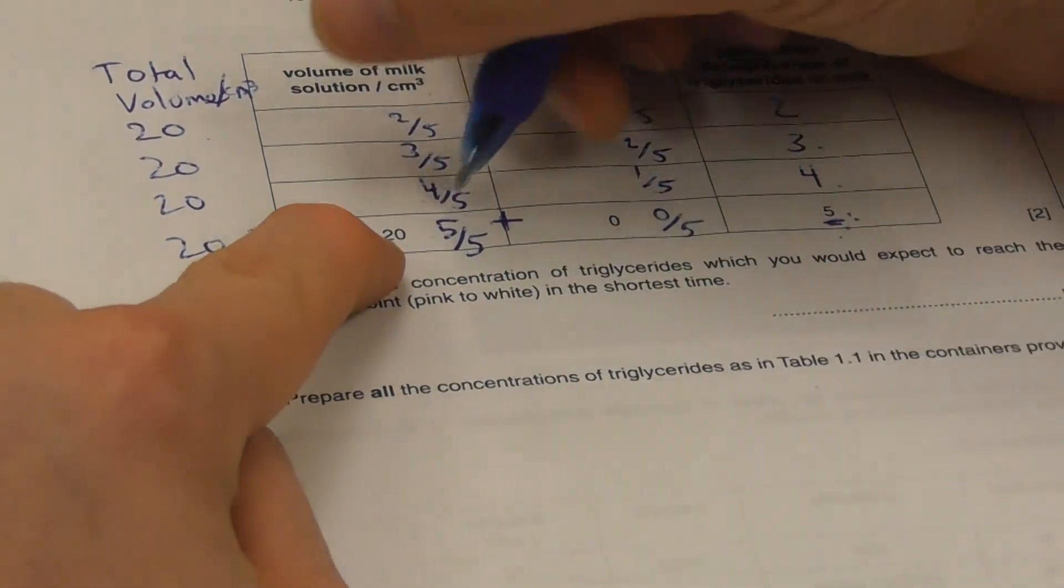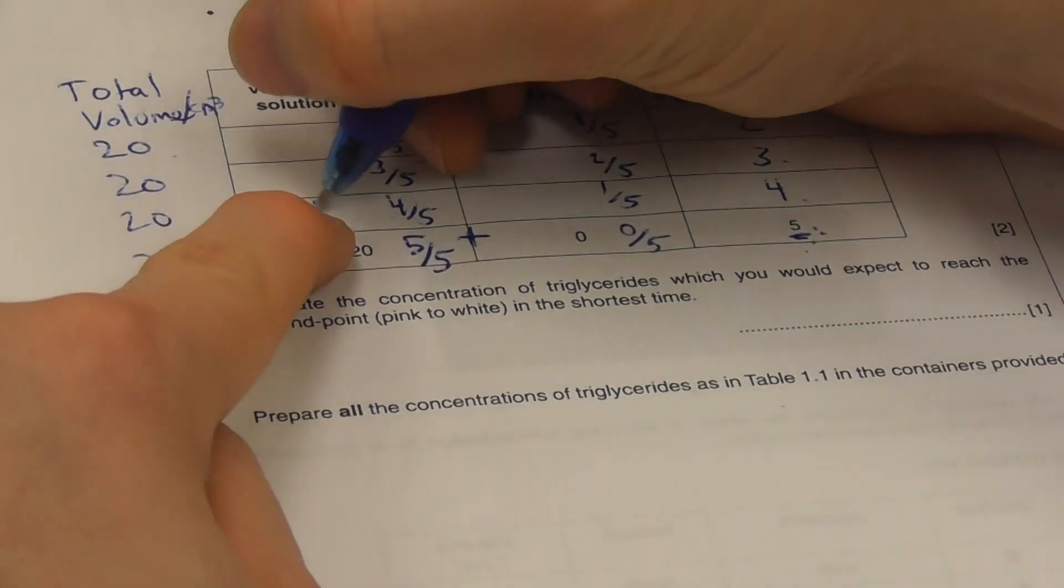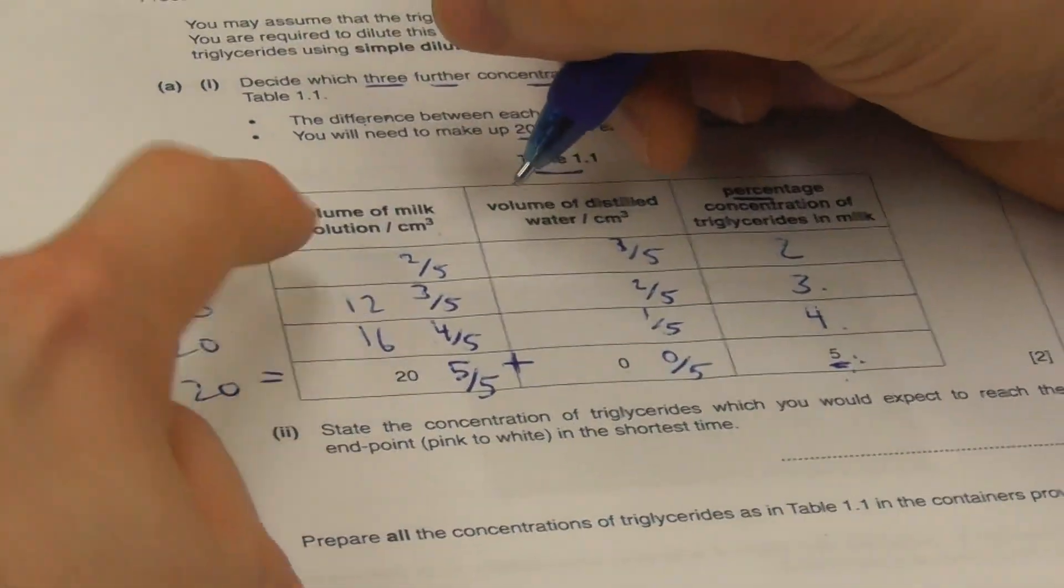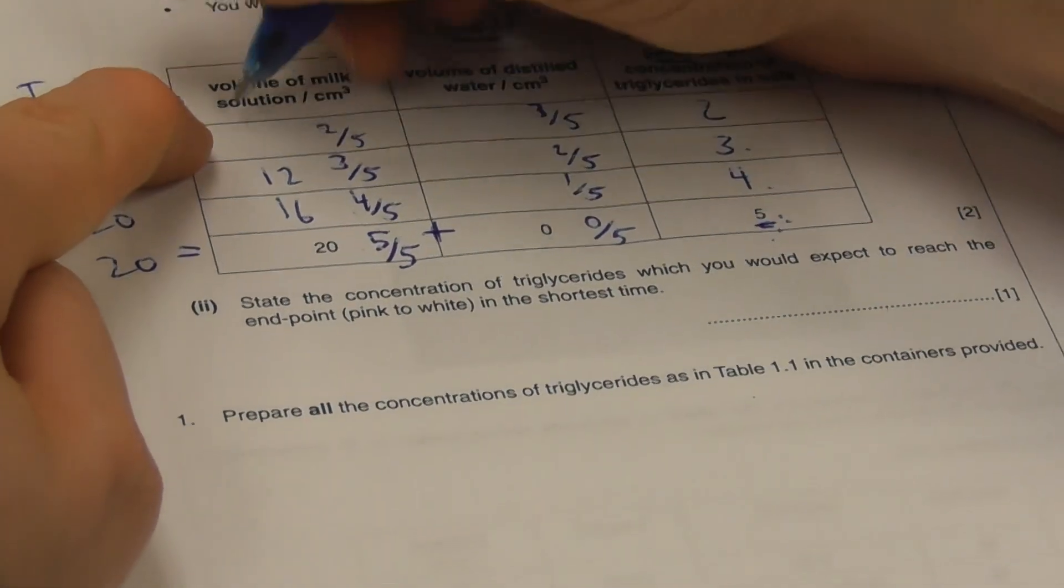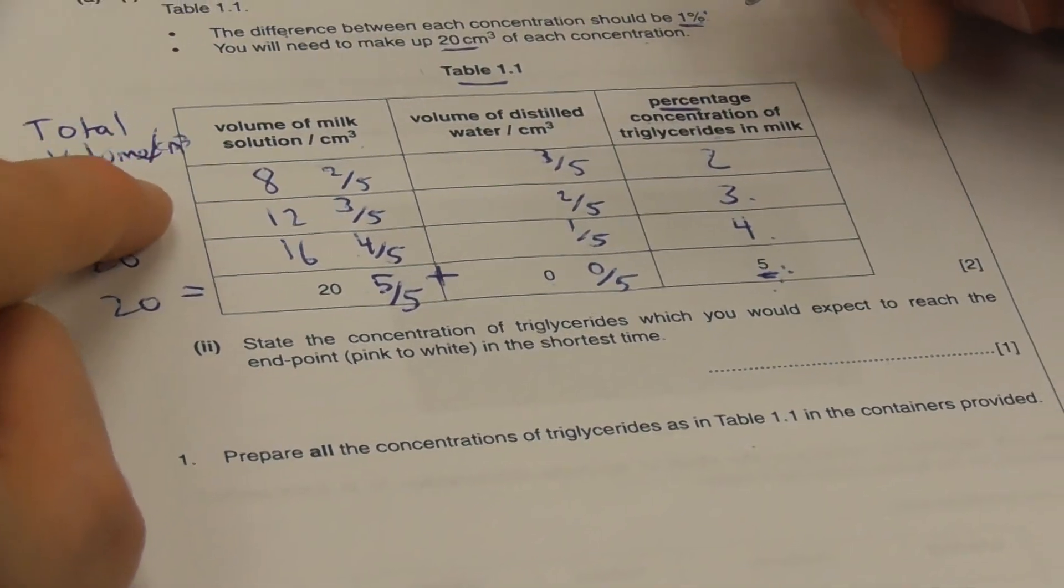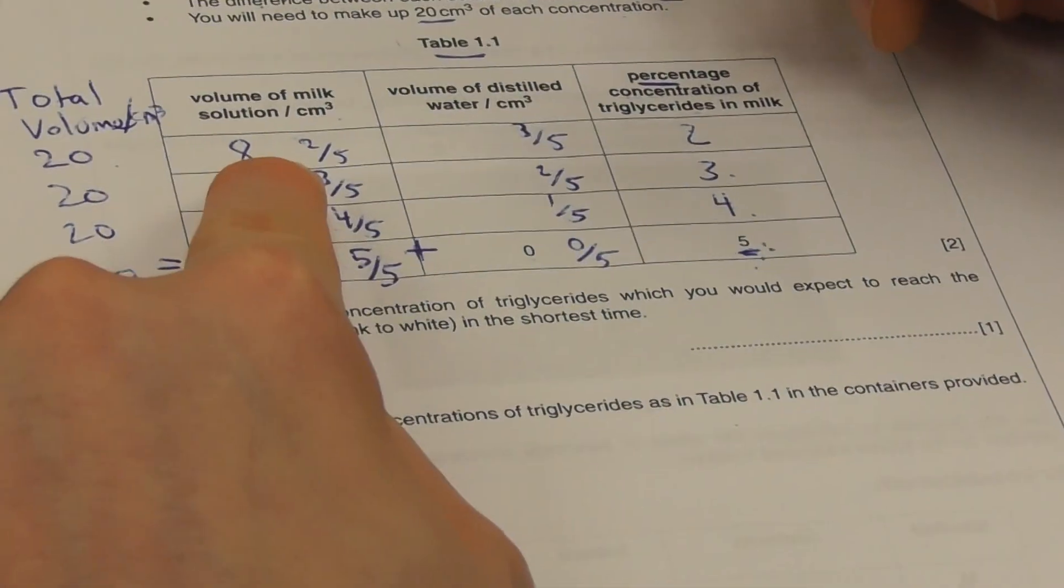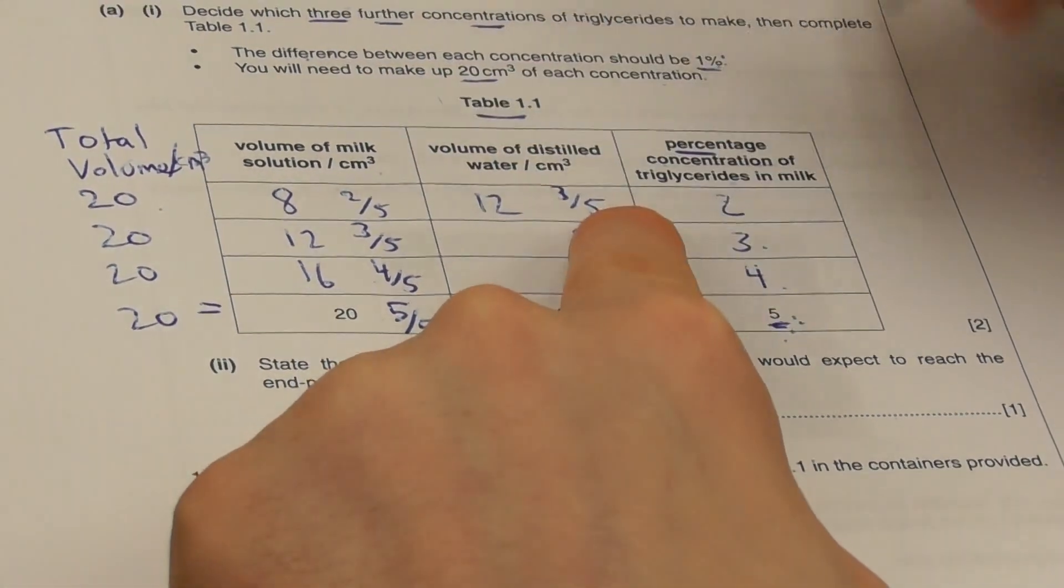So 5 fifths of 20 is 20. 4 fifths of 20 is 16. 3 fifths of 20 is 12. 2 fifths of 20 is 8. Now 20 minus 8 is 12. 3 fifths of 20 is 12.